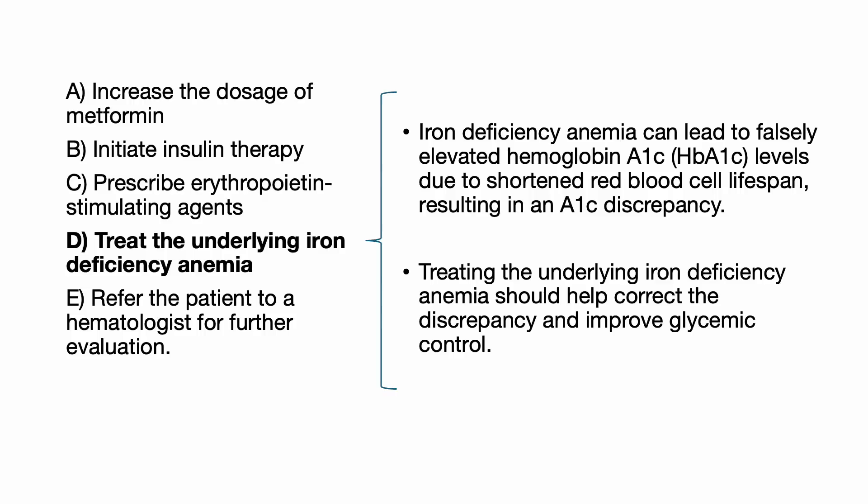The correct answer is D: treat the underlying iron deficiency anemia. The patient's presentation with microcytic anemia, low ferritin, low serum iron, and a high TIBC suggests iron deficiency, likely secondary to menorrhagia. Iron deficiency anemia can lead to a falsely high hemoglobin A1c due to a shortened red blood cell lifespan, resulting in an A1c discrepancy. Treating the underlying iron deficiency anemia should help correct the discrepancy and improve glycemic control.